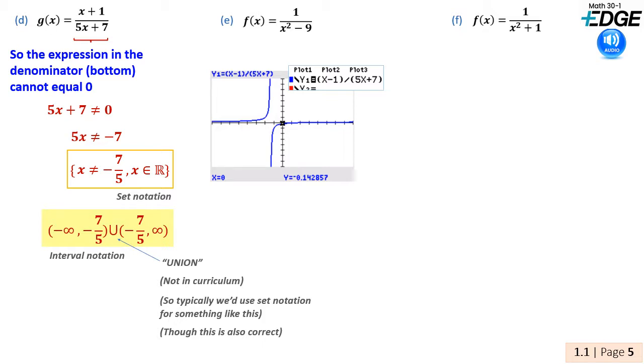We can see graphically how there's a left part and a right part of the graph, with a vertical asymptote separating them. Identifying the x-coordinate of this vertical asymptote, we should find negative 7 fifths, or negative 1.4.